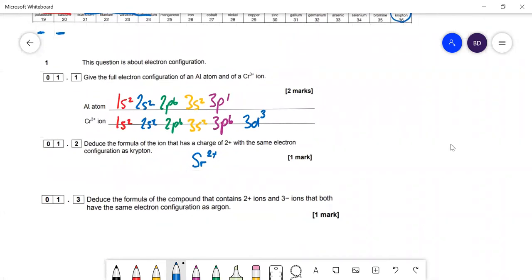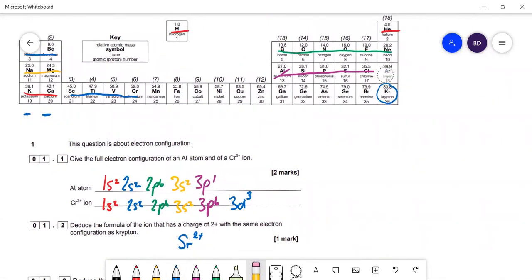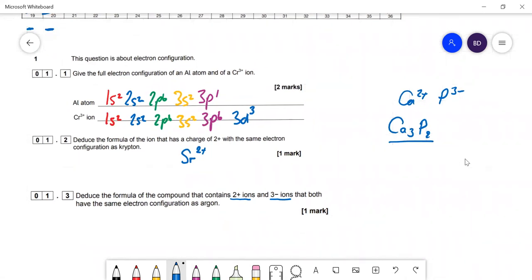The formula of the compound that contains 2+ and 3- ions both with the same electronic configuration as argon. The 2+ is calcium Ca2+, and the 3- is phosphorus P3-. So the formula of that ionic compound would be Ca3P2, calcium phosphide.